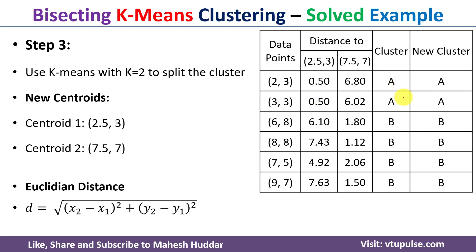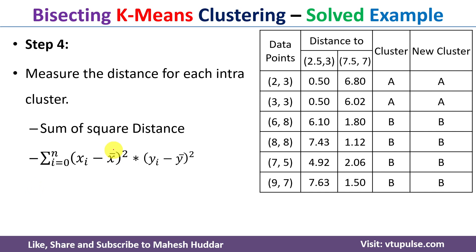We have now divided the data points into two clusters: cluster A contains (2,3) and (3,3), and cluster B contains the remaining four data points. Since the problem requires three clusters, in step four of the bisecting k-means algorithm we calculate the intra-cluster distance, also known as the sum of squared distances. The formula is: Σ[(xᵢ − x̄)² + (yᵢ − ȳ)²], where x̄ and ȳ are the means. We calculate this for cluster A and cluster B separately.